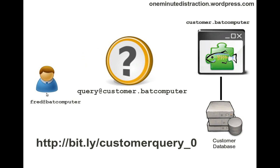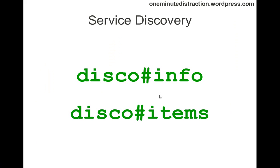The question now is how does fred.batcomputer, or any arbitrary client, know how to send a message to query at customer.batcomputer? XMPP has a service discovery facility where a client can query and introspect a server using two types of messages called disco info and disco items. Disco info means 'tell me about yourself' and disco items means 'give me a list of all the services or Java entities that the server is holding.'